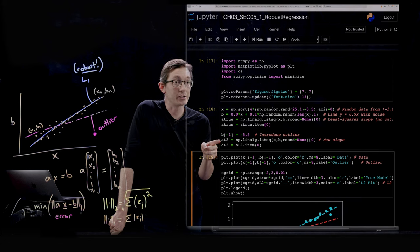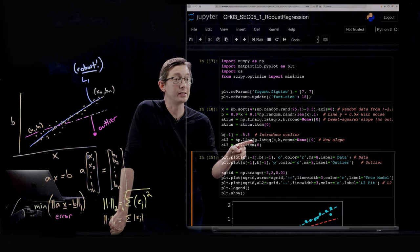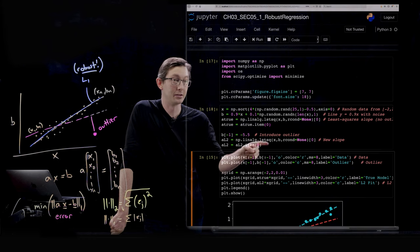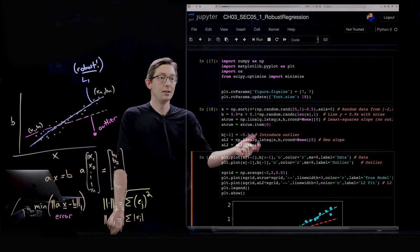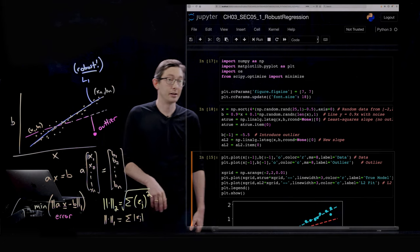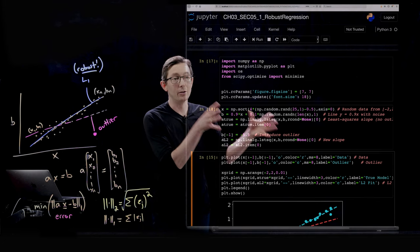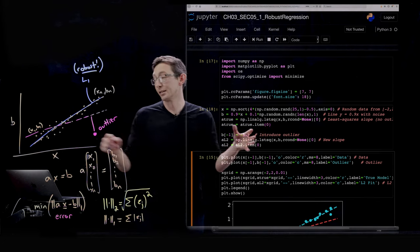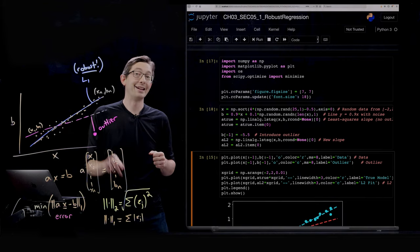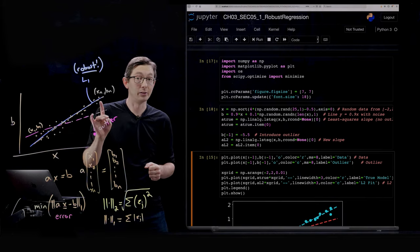So here we have the least square solution is really easy to compute using this least squares. It's a one line built into NumPy's linear algebra package. And so here we're estimating the slope A, but on the noisy data that has this outlier. So I don't think it's going to do a very good job.